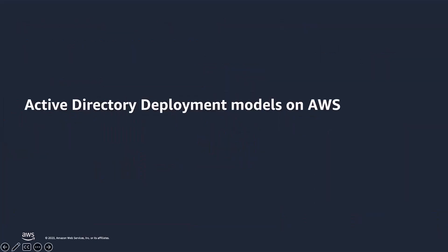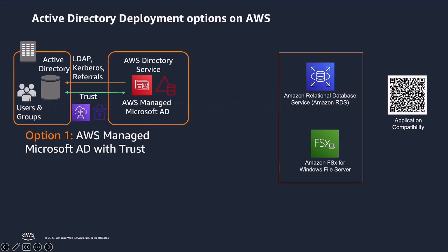Before we head over to the AWS Management Console for the demo, I would like to do a quick recap of Active Directory deployment options on AWS. Depending upon the use case and the type of trust needed, customers can choose from three different Active Directory deployment models on AWS. Customers can choose to run a self-managed AD hosted in a data center or on Amazon EC2, then create a trust with AWS-managed Microsoft AD. This is applicable for business applications that require Kerberos authentication — for instance, Amazon RDS running Oracle and SQL Server, or Amazon FSx for Windows File Server. For a complete list of applications compatible with AWS-managed Microsoft AD, please scan the QR code displayed on your screen.